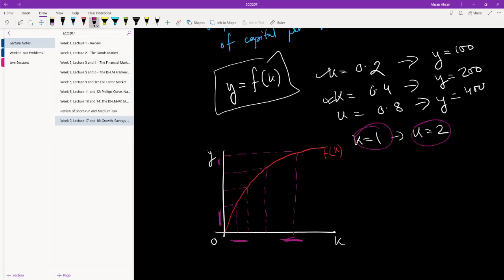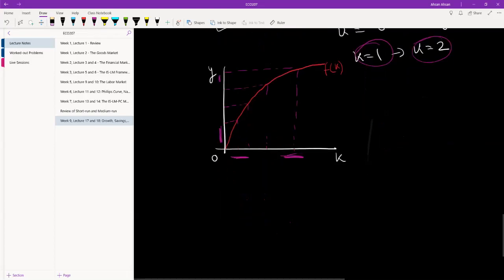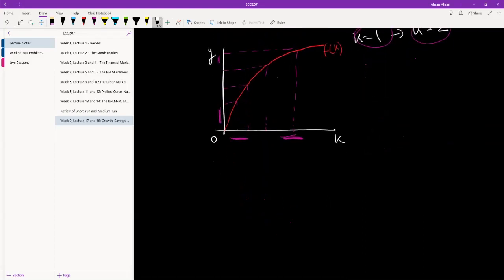As we have more and more of capital, we have less and less increase in y. So let me just draw another one. This is k, we have zero here, this is y, and the diagram looks which is f(k).